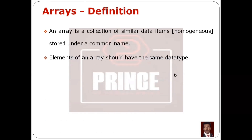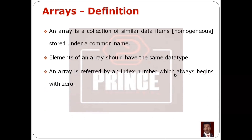Elements of an array should have the same data type. An array is referred to by an index number. So if we have an array, we have a set of elements, and we refer to each element using its index number.